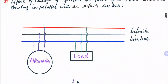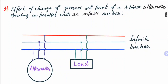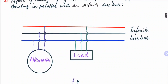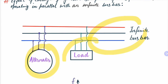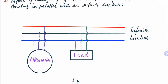Now we are going to study the effect of change in mechanical input to the alternator. Mechanical input means if we are considering a steam turbine, then mechanical input can be changed by increasing steam input, that is by increasing the governor set point. This figure shows an alternator connected to the infinite bus bar, and a nearby load is also shown.